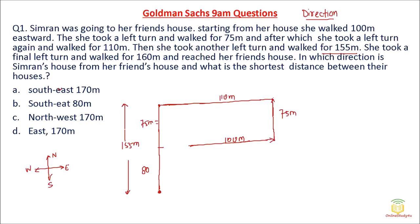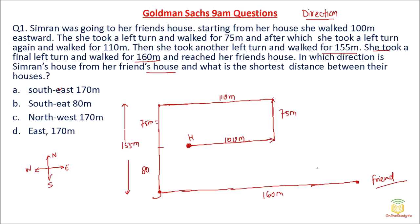Now she has reached here. She took a final left turn and walked 160 meters — that is 110 meters plus 50 more, totaling 160 meters. Then Simran has reached her friend's place. The question asks: in which direction is Simran's house from her friend's house? Simran's house is here and her friend's house is here. From her friend's house, Simran's house is in the north-west direction. So the answer is option C.